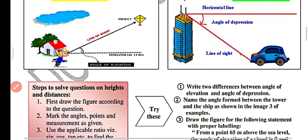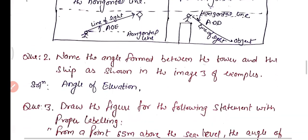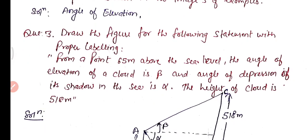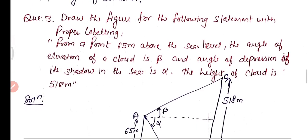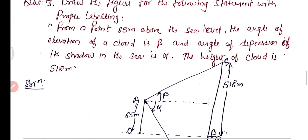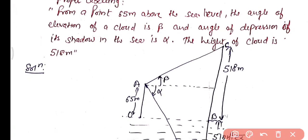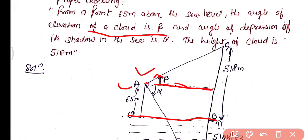Question three: draw the figure for the following statement with proper labeling. From a point 65 meters above the sea level, the angle of elevation of a cloud is beta. As you can see in the figure, the sea level is shown at the bottom. Point A is 65 meters above the sea level. The angle of elevation from that point to the cloud is beta, formed between the horizontal line and the line of sight.